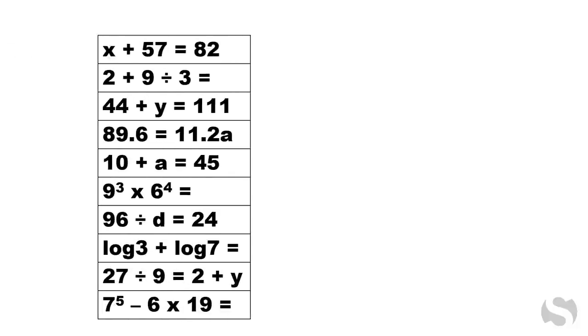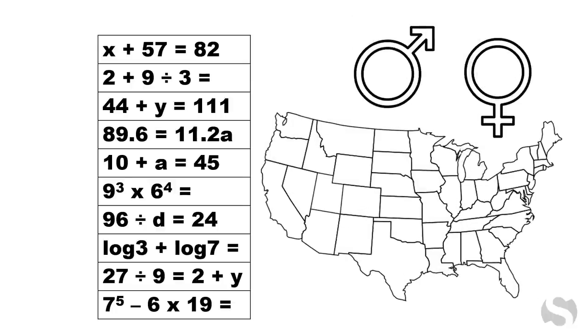Knowing how standardized tests are created helps with understanding what standard scores really mean. First, the test developer designs a task, which could be solving math problems. The developer then gives the test to a group of people, called a norming sample, that represents the population along the lines of things like gender, ethnicity, and location.